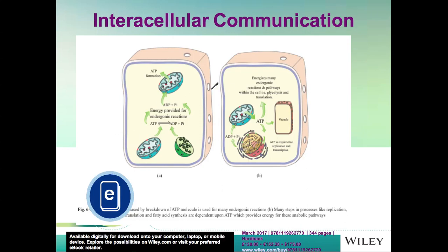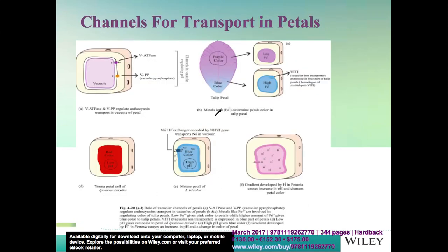Another example of intracellular communication shows ATP formation in the mitochondria being transported to other organelles. Additionally, channels for transport of pigment molecules are present in petals — sometimes dependent upon hydrogen ion concentration or pH. In tulips, low ferric ion concentration gives purple coloration while high ferric ion concentration gives blue coloration. In Ipomoea, red color is due to low pH while blue color is due to high pH.